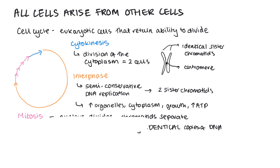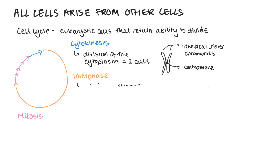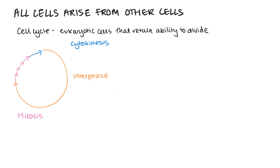Every stage in the cell cycle is very tightly regulated. There are a series of checkpoints which need to be met in order to progress between each stage. Sometimes, perhaps due to a mutation, these can become dysregulated and lead to cell division becoming uncontrolled. This means that cells divide rapidly and not necessarily when stimulated, and this can lead to the formation of cancers and tumours.